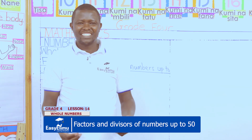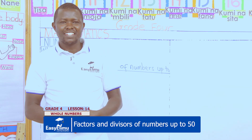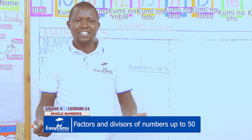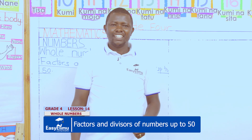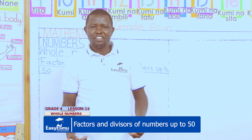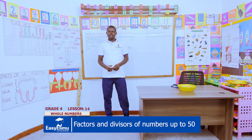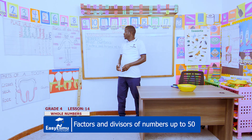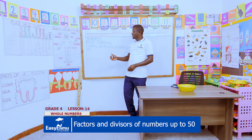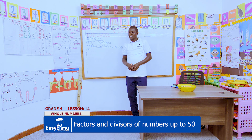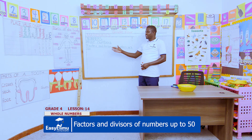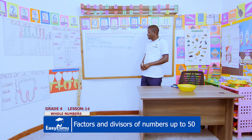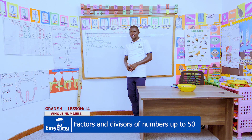Hello learners, my name is teacher Jonathan. Welcome to Easy Alimu Learning Simplified. In our grade 4 mathematics activities for today, we are on all numbers, and today we are working on factors and divisors of numbers up to 50.